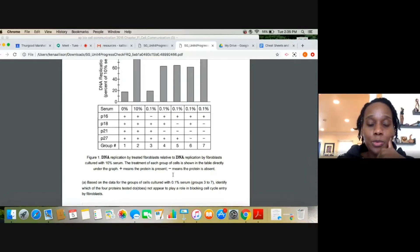Based on the data of the groups of cells cultured with the 0.1% serum from groups three to seven, identify which of the four proteins tested do or does not appear to play a role in blocking cell cycle entry.